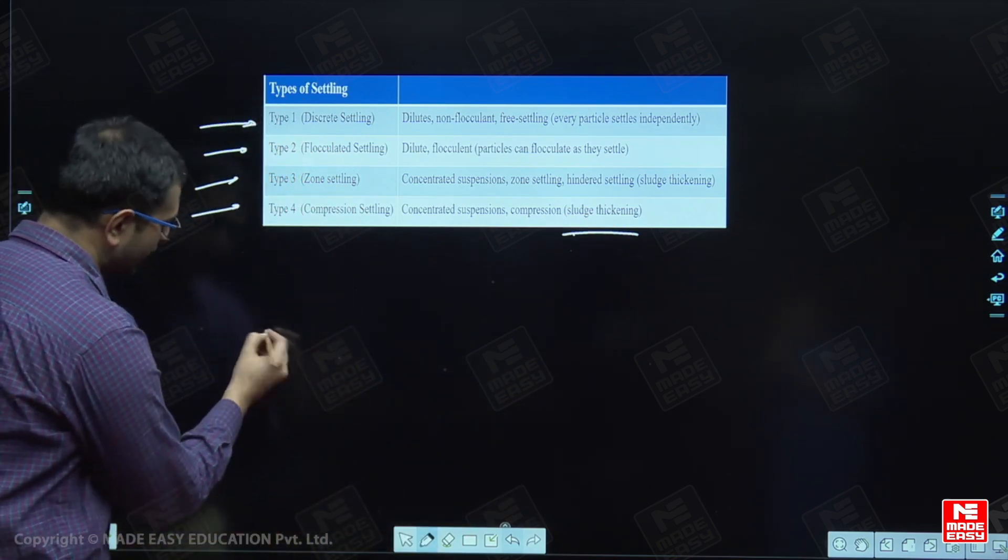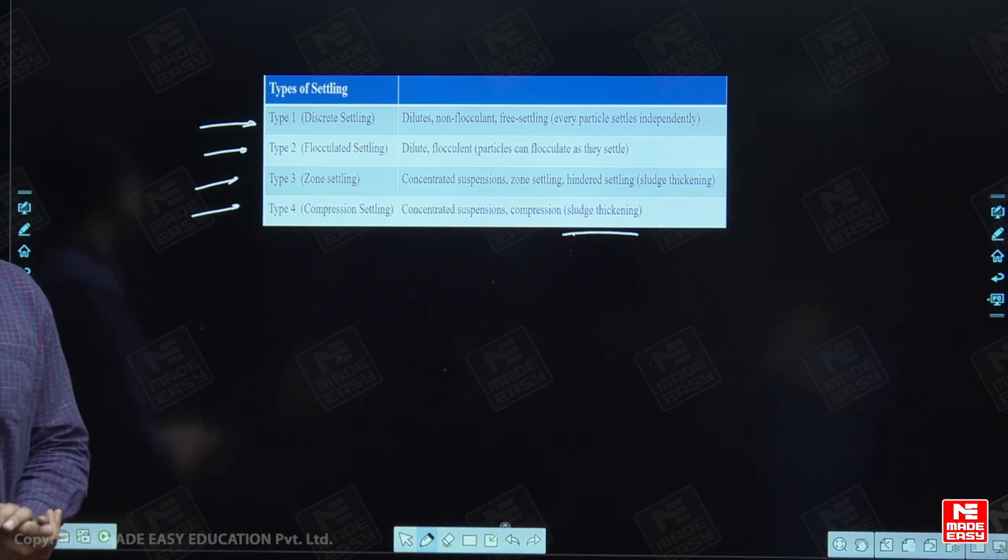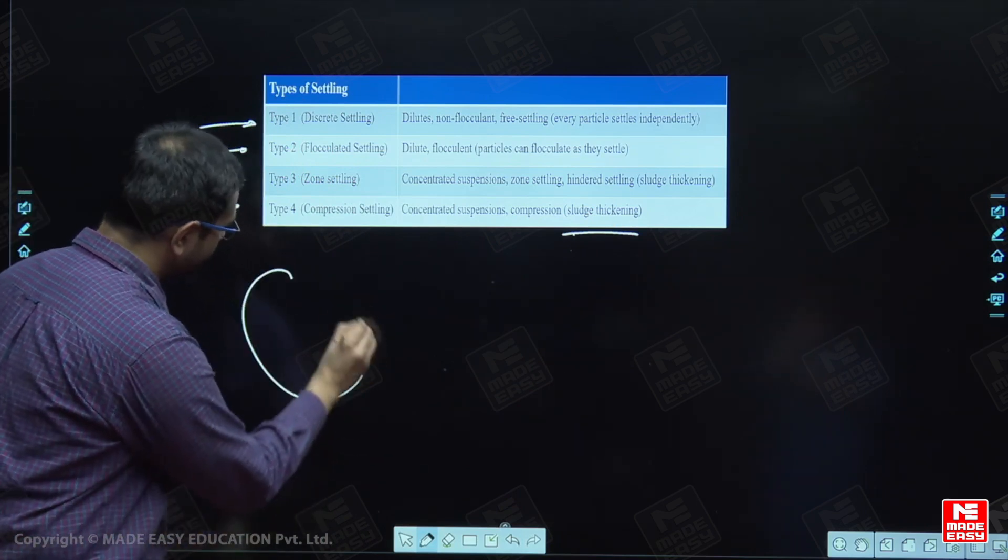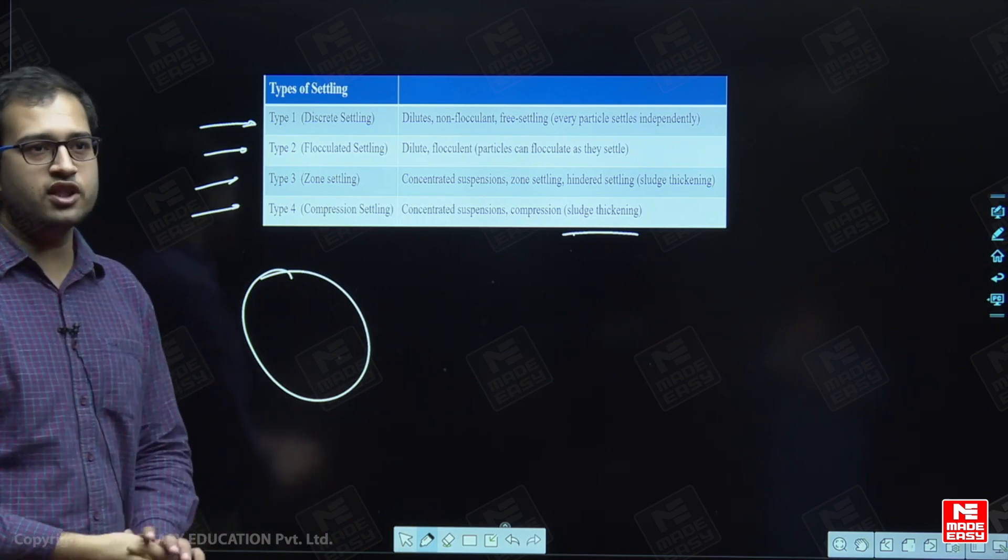Let us discuss about discrete settling. In discrete settling, we generally consider that the particles are spherical. For a spherical particle, which is settling under the influence of gravity,